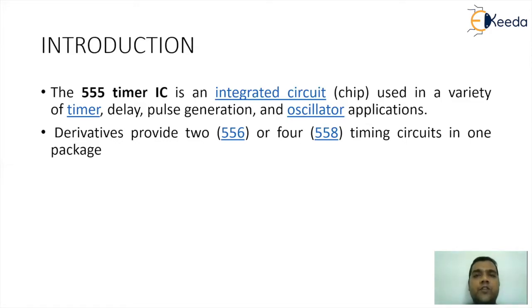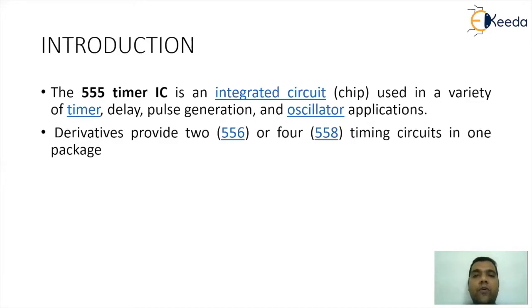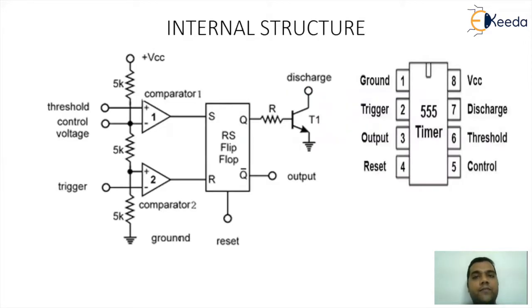There are advanced versions of IC555 — one of them is IC556 and the other one is IC558, which will give you 2 and 4 timer circuits in one package respectively. Now let's go for the internal structure. IC555 is basically an 8-pin IC.